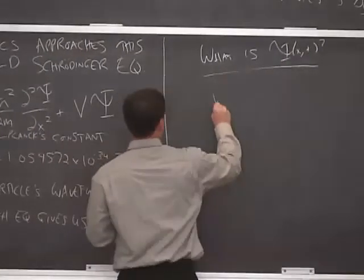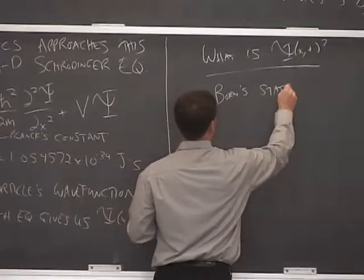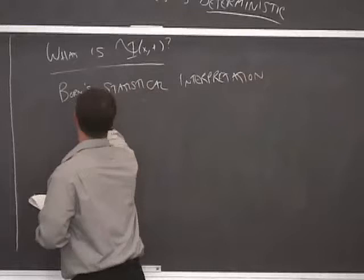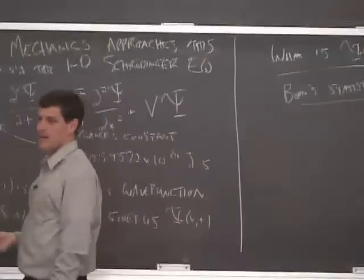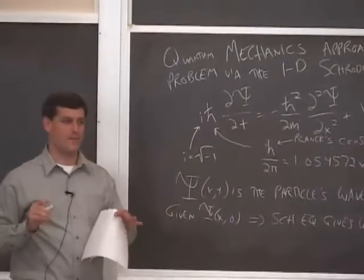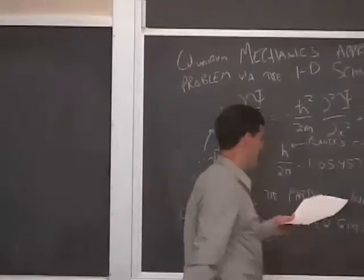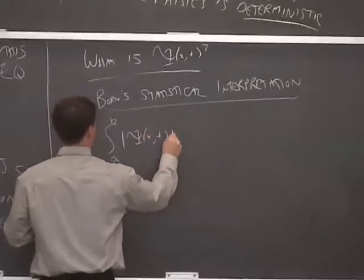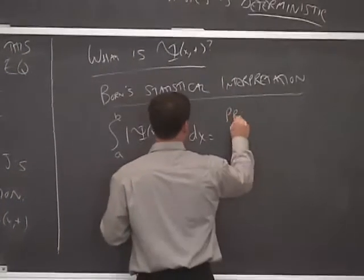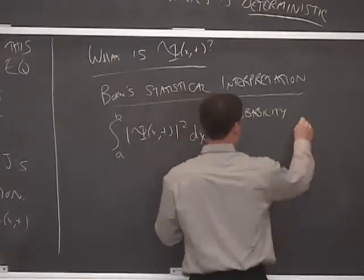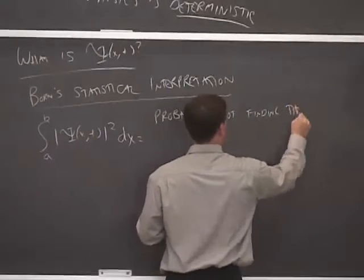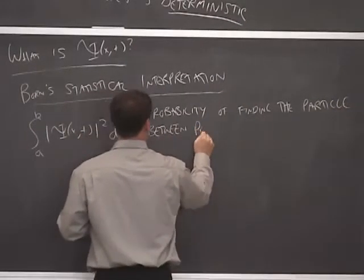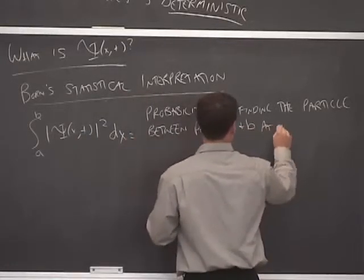So there's a famous interpretation of the wave function by Born. This is Born's statistical interpretation. Born says that ψ itself has no meaning. In fact, the magnitude squared of ψ has no meaning. But an integral of magnitude squared of ψ over some region in space does have physical meaning. By that, I mean if we were to take an integral, a definite integral between a and b of |ψ|² dx, that this is equal to the probability of finding the particle between points a and b at time t.